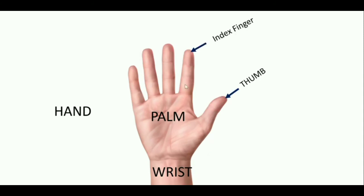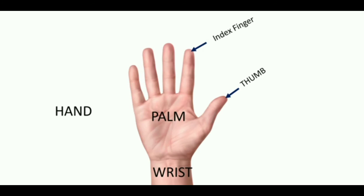This is called the thumb. This one we call the index finger, or pointer. This finger we call the middle finger, as it is in the middle of our hand with two fingers on either side — so we call it the middle finger.